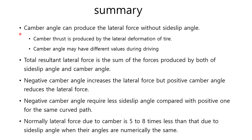Here we have a summary. Camber angle can produce the lateral force without the side slip angle. Camber thrust is produced by the lateral deformation of the tire. Camber angle may have different values during driving. The total resultant lateral force is the sum of the forces produced by both side slip angle and camber angle. The negative camber angle increases the lateral force, but the positive camber angle reduces the lateral force. The negative camber angle requires less side slip angle compared with the positive one for the same curved paths. Normally, lateral force due to camber is 5 to 8 times less than that due to side slip angle, when their angles are numerically the same.